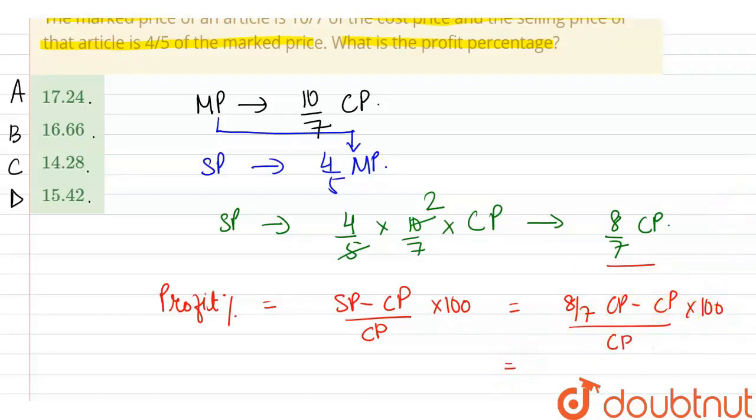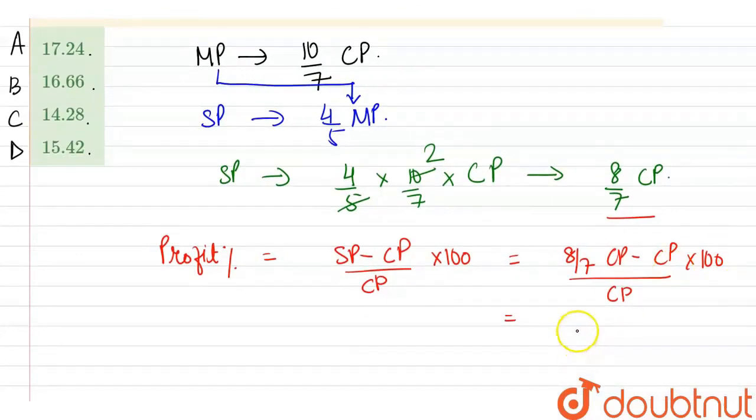Isko hum further solve karengi. So, hum menei pata hai, 1 by 7 by 100. So, solve karnei pata hai, 14.28 percentage, right?